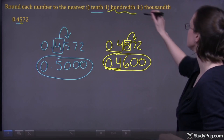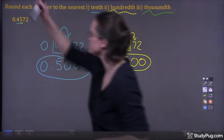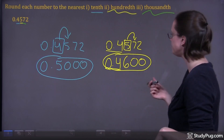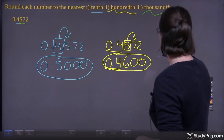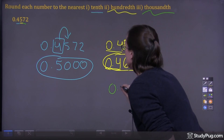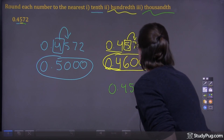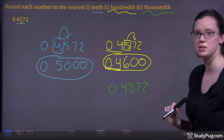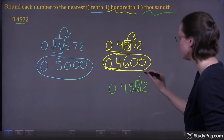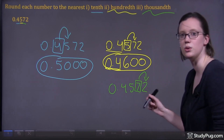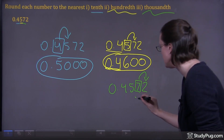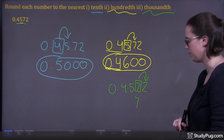Now we're going to round to the nearest thousandth. So our thousandth position is three to the right of our decimal point. We have 0.572, and our thousandth position is our seven. We look to the right of our seven and we see it's a two. Two is less than five, so that means our seven stays the same — the position we're rounding stays the same.